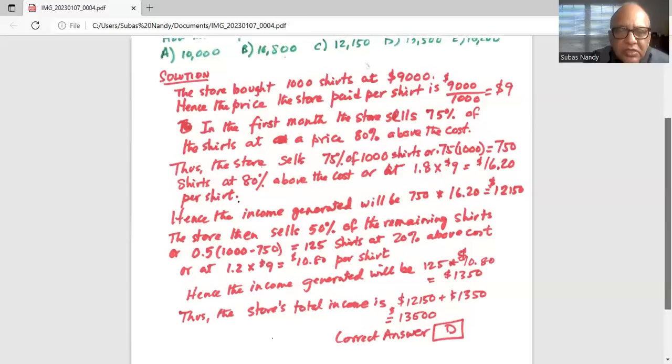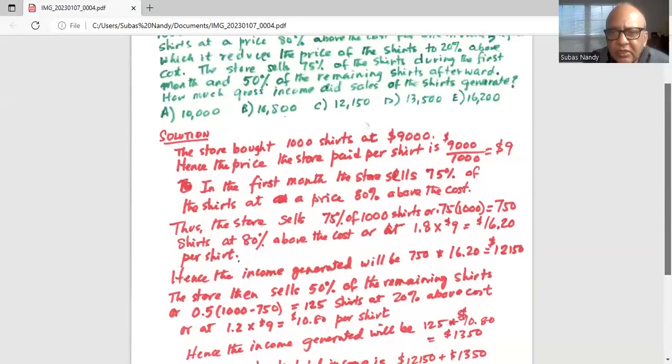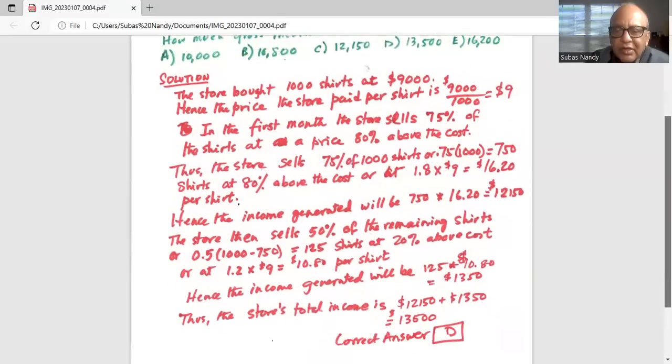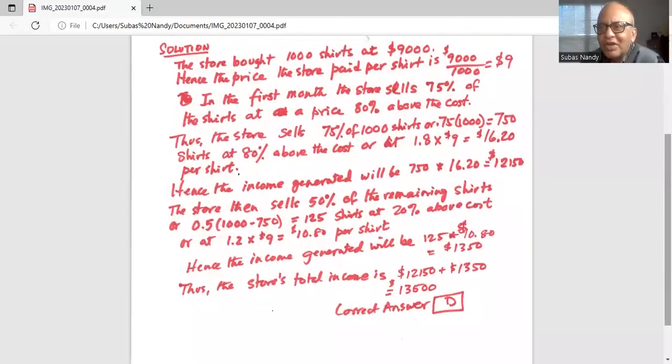And that matches with option D, $13,500. So the correct answer is D. So I will stop here today. If you still have questions, you can always shoot me a comment and I'll get back to you as soon as possible.